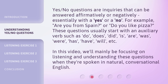Yes, No Questions are inquiries that can be answered affirmatively or negatively, essentially with a Yes, or a No. For example, Are you from Spain? Or, Do you like pizza? These questions usually start with an auxiliary verb such as Do, Does, Did, Is, Are, Was, Were.